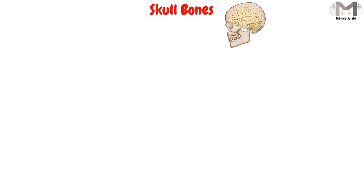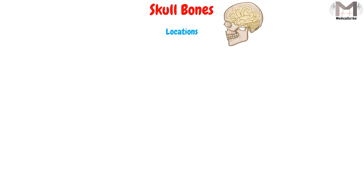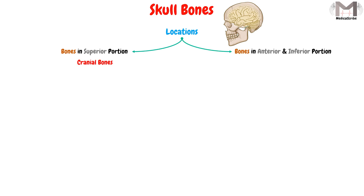And if we need to be more precise, in the skull bones we will find that these bones will be classified according to their locations: into the bones found in the superior portion of the brain, which are called the cranial bones, and into the bones found in the anterior and inferior portion of the skull, which are called the facial bones.